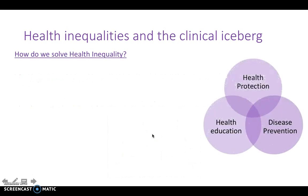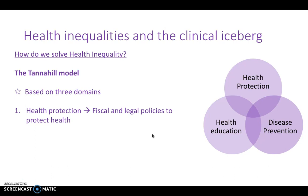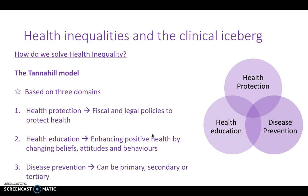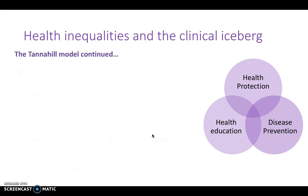Moving on with health inequalities — how do we solve them? We have the Tannehill model, which focuses on three aspects of health inequality: health protection, health education, and disease prevention. Health protection looks at the fiscal and legal policies to protect our health. Health education is enhancing positive health by changing the beliefs, attitudes, and behaviours of the service users. And disease prevention can be primary, secondary, or tertiary.